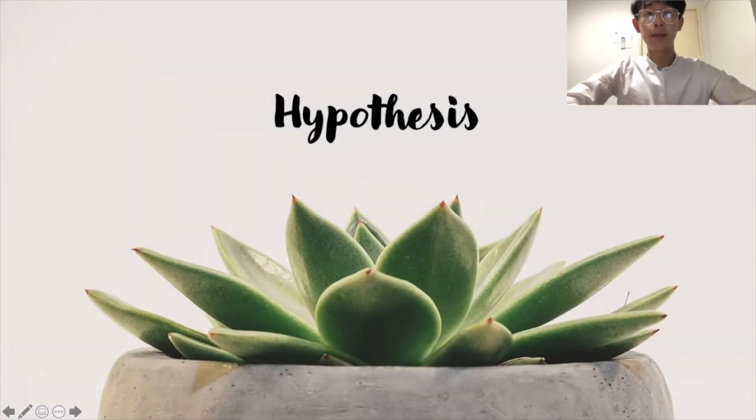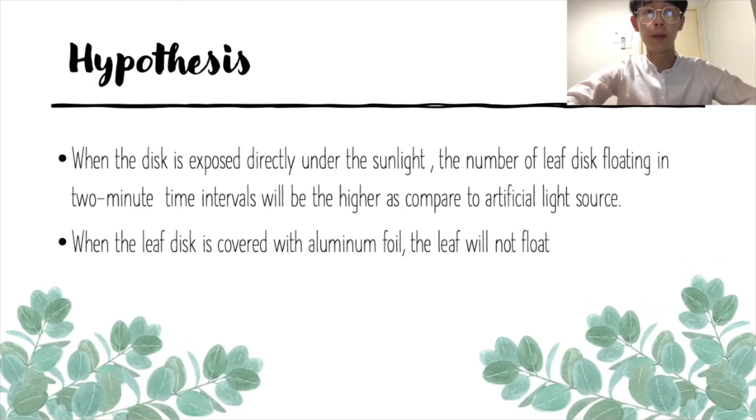Hi, I'm Joshua. So, I'll continue the presentation with the hypothesis in this experiment. The hypothesis in this experiment is, When the leaf disks is exposed directly under the sunlight, the number of leaf disks floating in 2 minutes time interval will be higher as compared to the artificial light source. However, when the leaf disks is covered with aluminum foil, the leaf will not float.